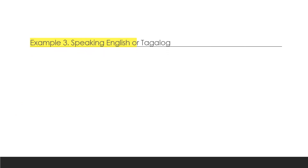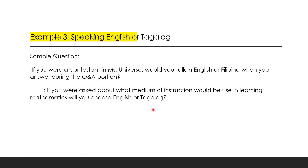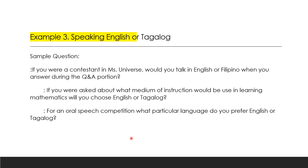Example number three involves speaking English or Tagalog. Sample questions include: 'If you were a contestant in Miss Universe, would you talk in English or Filipino when answering questions in the Q&A portion?' Or: 'What medium of instruction would be used in English Mathematics — would you choose English or Tagalog?' Or: 'For an oral speech competition, what particular language would you prepare — English or Tagalog?'